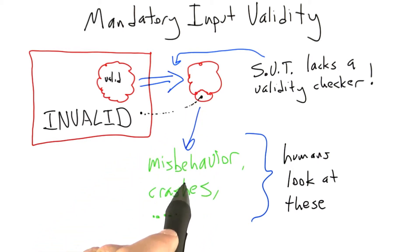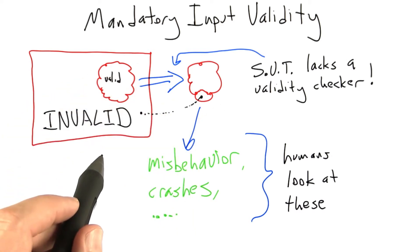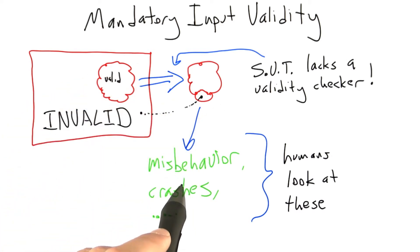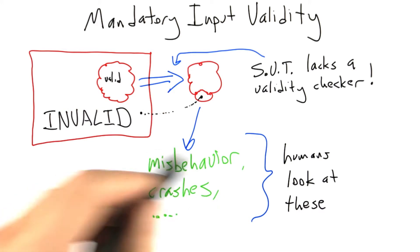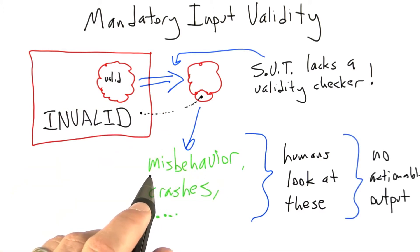After looking at about 10 bugs that are caused by invalid inputs to the software under test, the person who's looking at that input is going to get tired of it and isn't going to look at them anymore. Now we have a problem. Now we have a random testing loop producing no actionable output, and so our random testing effort is basically failing.